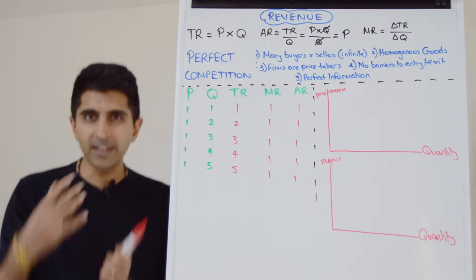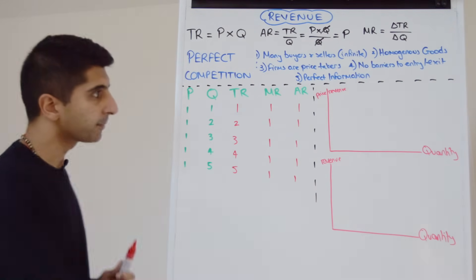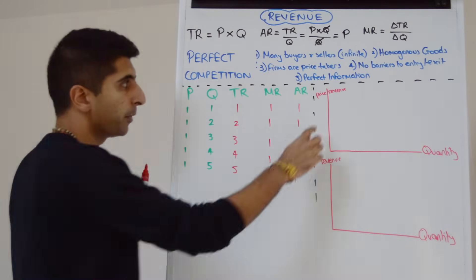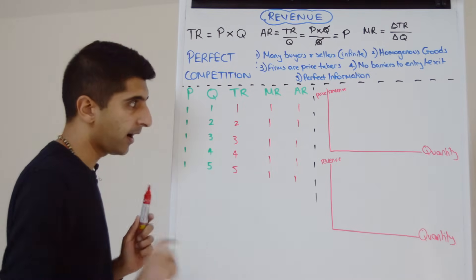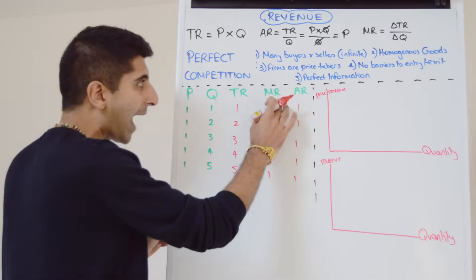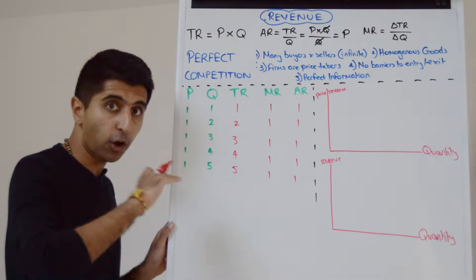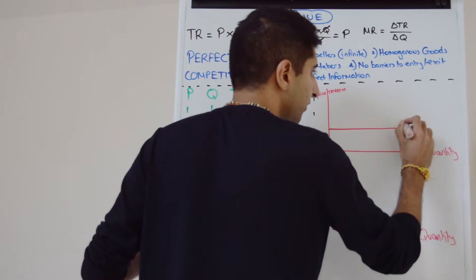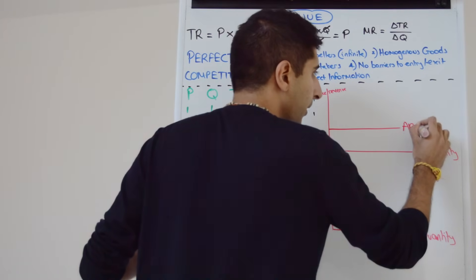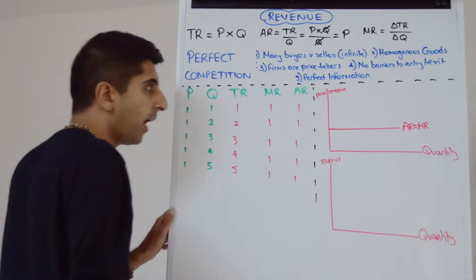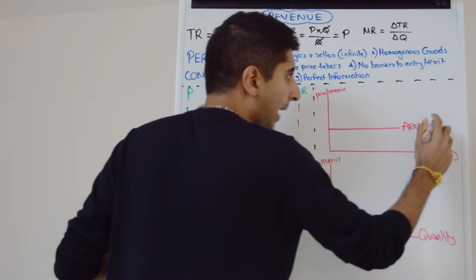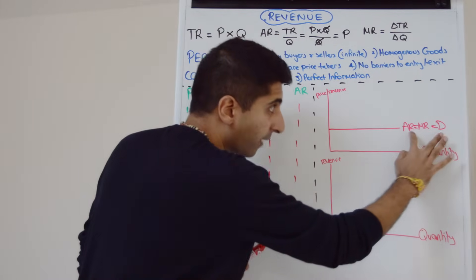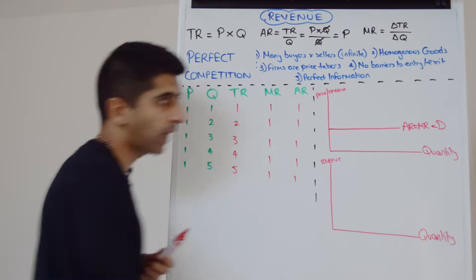So if we see the numbers here, it's very easy now to draw our revenue curves. Let's start by drawing average revenue and marginal revenue. We've got to have price and revenue on the axis because we're drawing AR here. We can see that both AR and MR are the same, and they are constant over a range of quantity. So AR and MR in perfect competition will just look like that. I'm also going to label it AR equals MR, which equals demand. At the end of this video, I'll explain why average revenue is equal to demand.